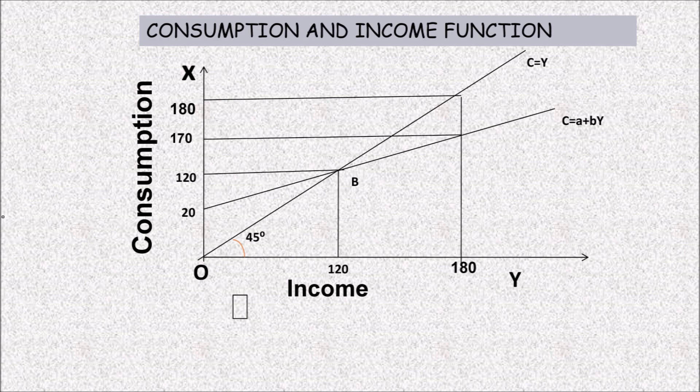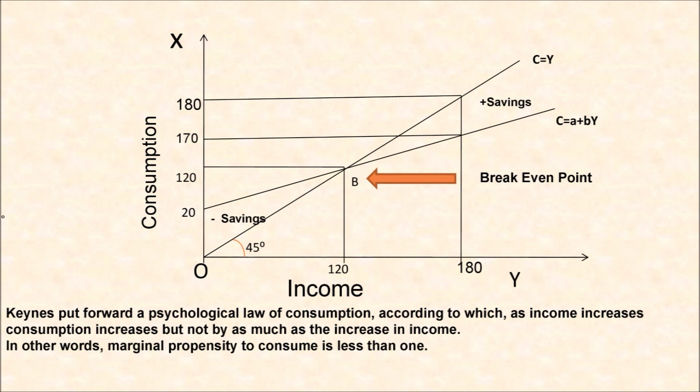It is clear that consumption increases with the rise in the level of income. The consumption function states the various amounts of consumption expenditure corresponding to different levels of income. Keynes hypothesized that the marginal propensity to consume is less than one — as household income increases, the rate of saving also increases proportionally.